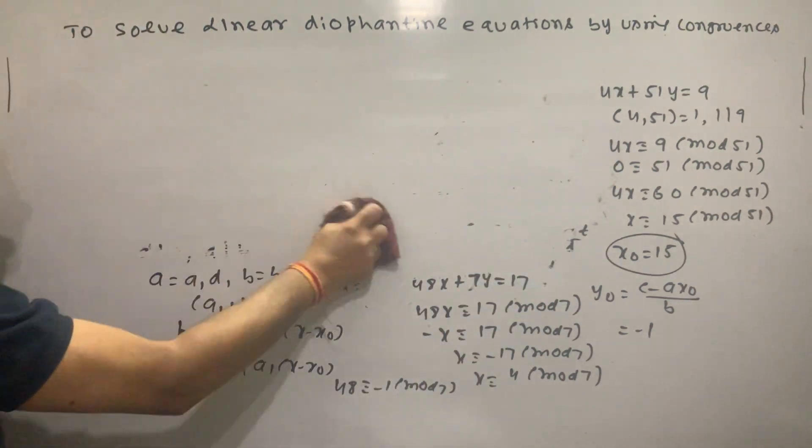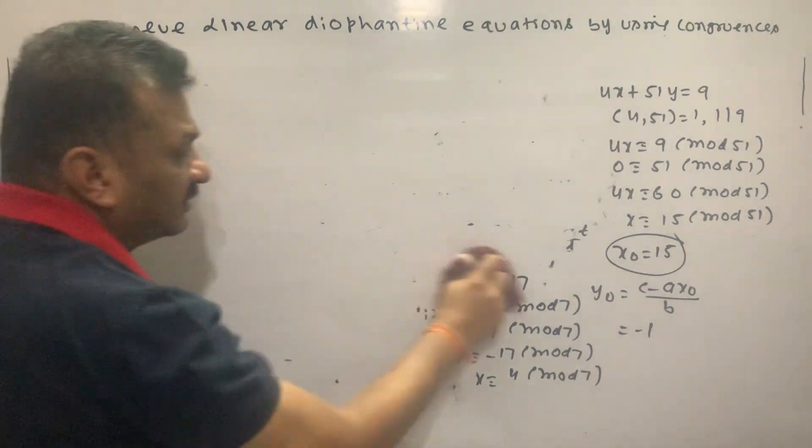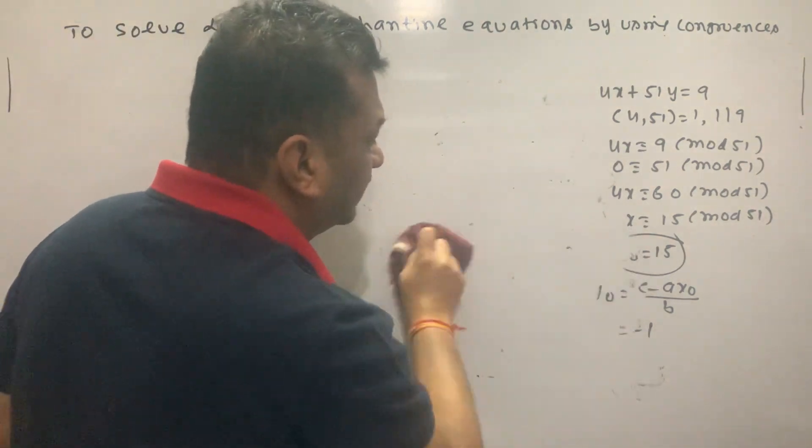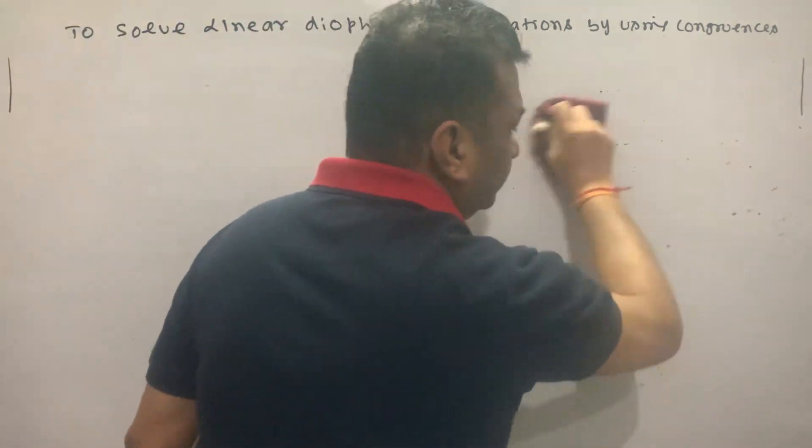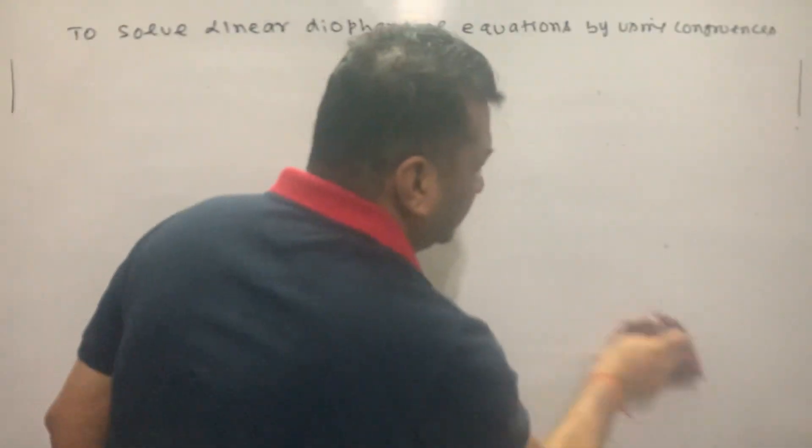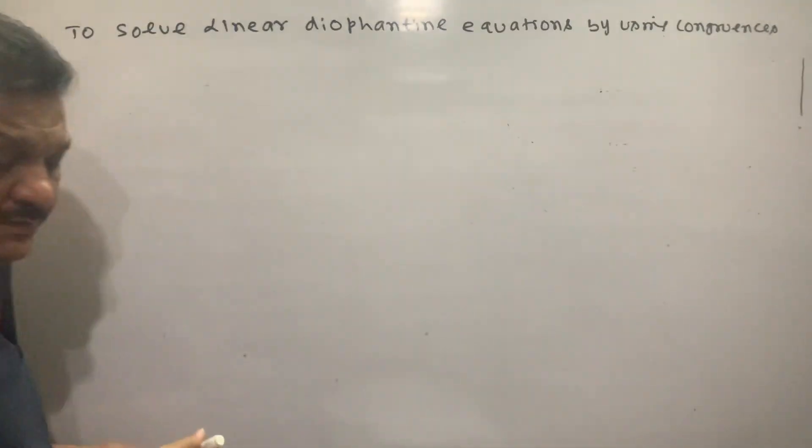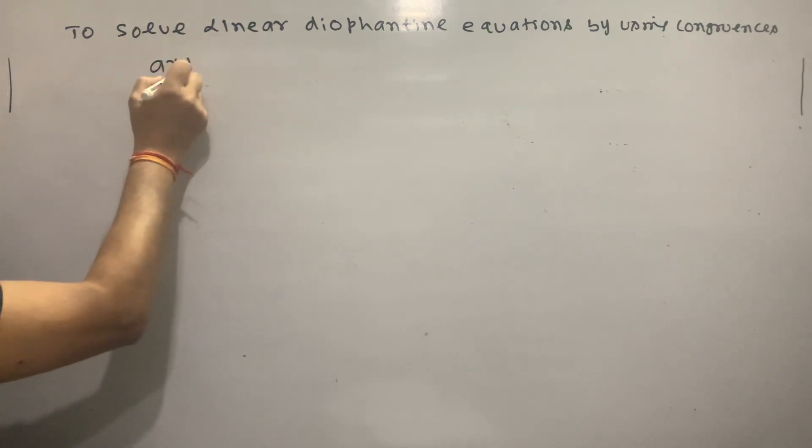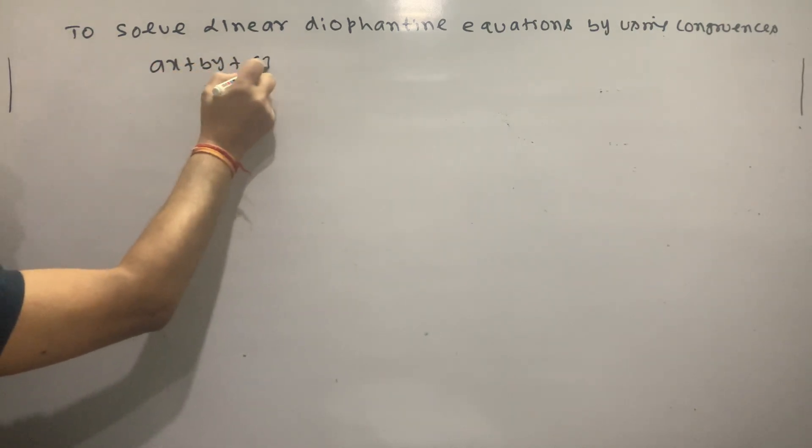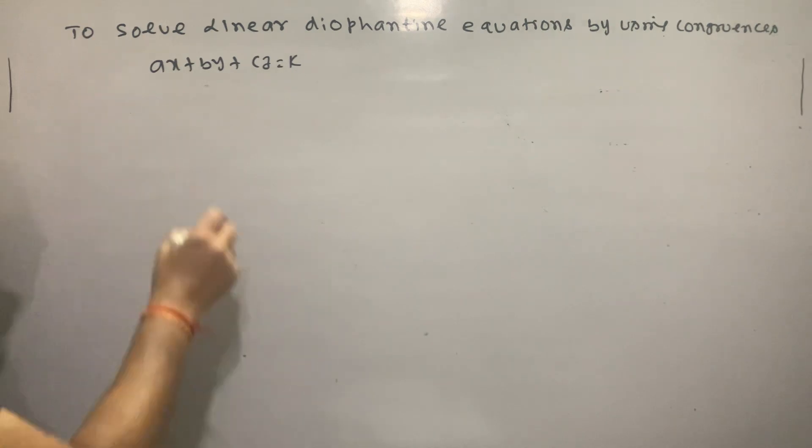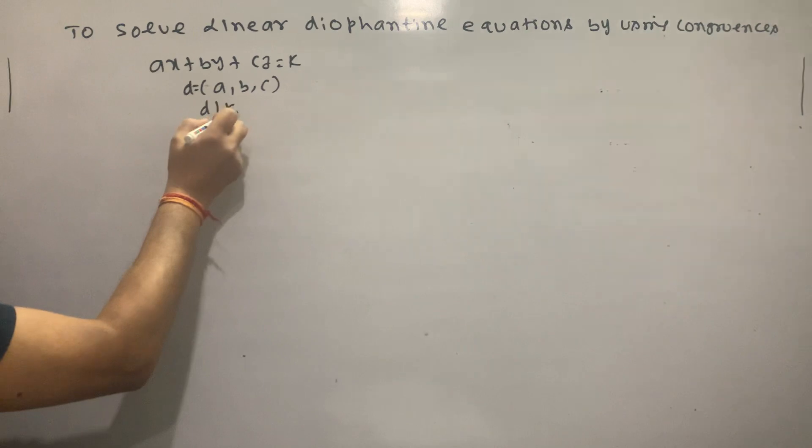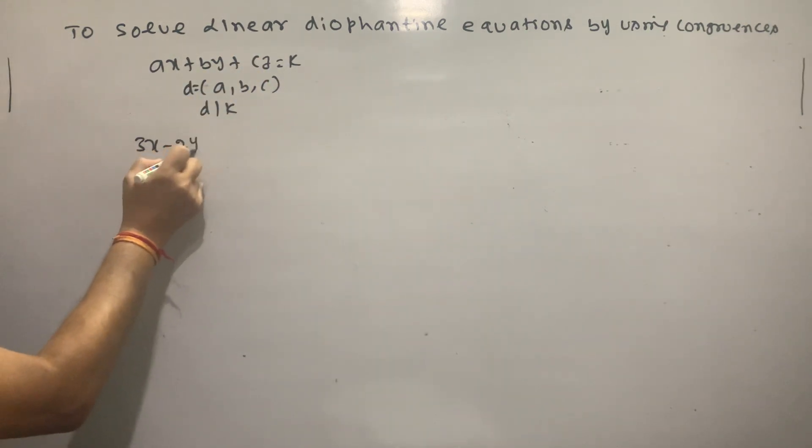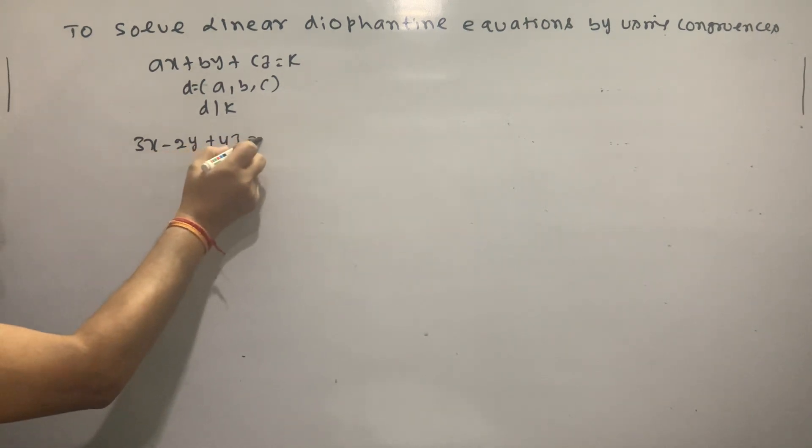For linear Diophantine equations with three variables, how do we solve it? For example, AX plus BY plus CZ equal to K. If A, B, C have GCD D and D divides K, this equation has a solution.